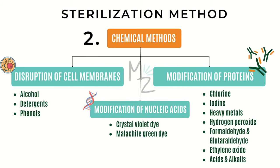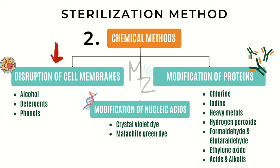The second method of sterilization is chemical methods. Chemical agents act primarily by one of three mechanisms: disruption of lipid-containing cell membranes, modification of proteins, and modification of DNA — the nucleic acid. Starting with disruption of cell membranes: number one is alcohol.